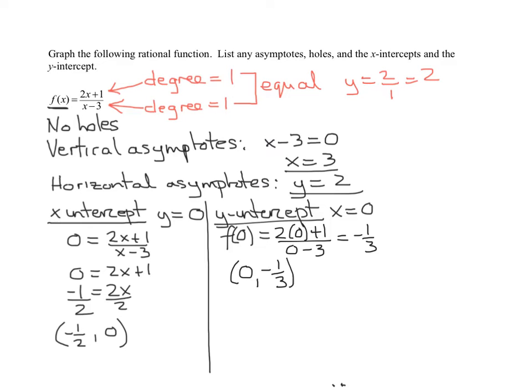And the only other thing it's useful to find is, does the graph cross the horizontal asymptote? And the way you do it is you set the function 2x plus 1 over x minus 3 equal to the horizontal asymptote.